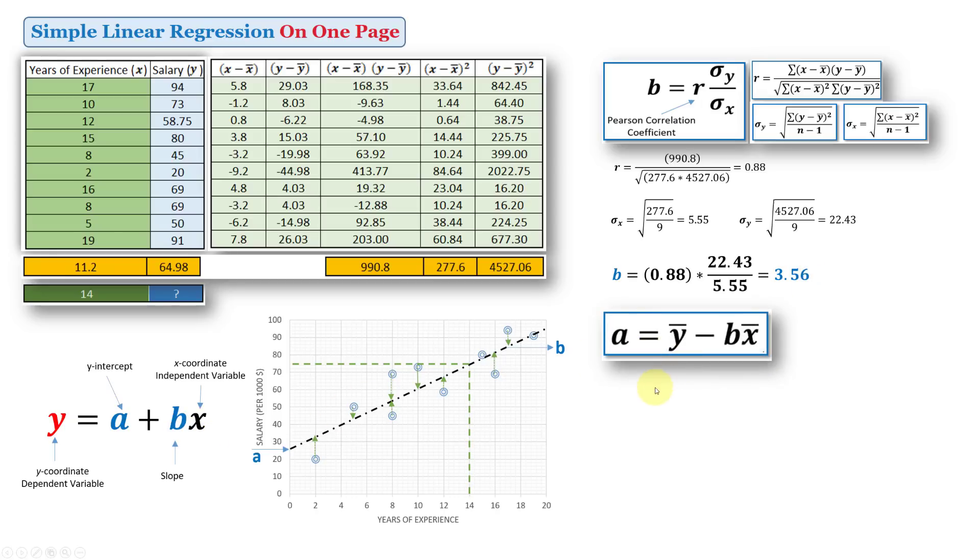So this is b. I need to calculate a, and a is very simple, is equal to ȳ minus b times x̄. So that means once I calculated b, it's easy for me to get a, since ȳ is given here and x̄ is also given here. So simply, this will be the ȳ, this value, minus b, the value I've already obtained here, multiplied by the average of x. So 25.1 is the value for a.